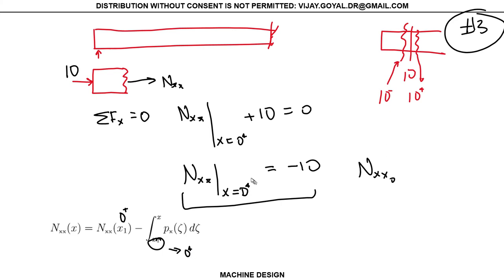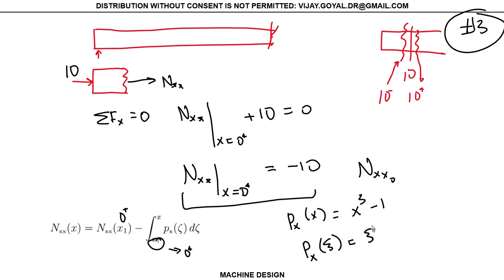In the integral equations you'll see in my hand notes, there's a curly variable. For example, if p(x) = x³ − 1, then inside the integral we write p(ξ) = ξ³ − 1. I use a different variable in the integrand rather than the same x to avoid confusion when evaluating at a specific x value, but either approach is acceptable.